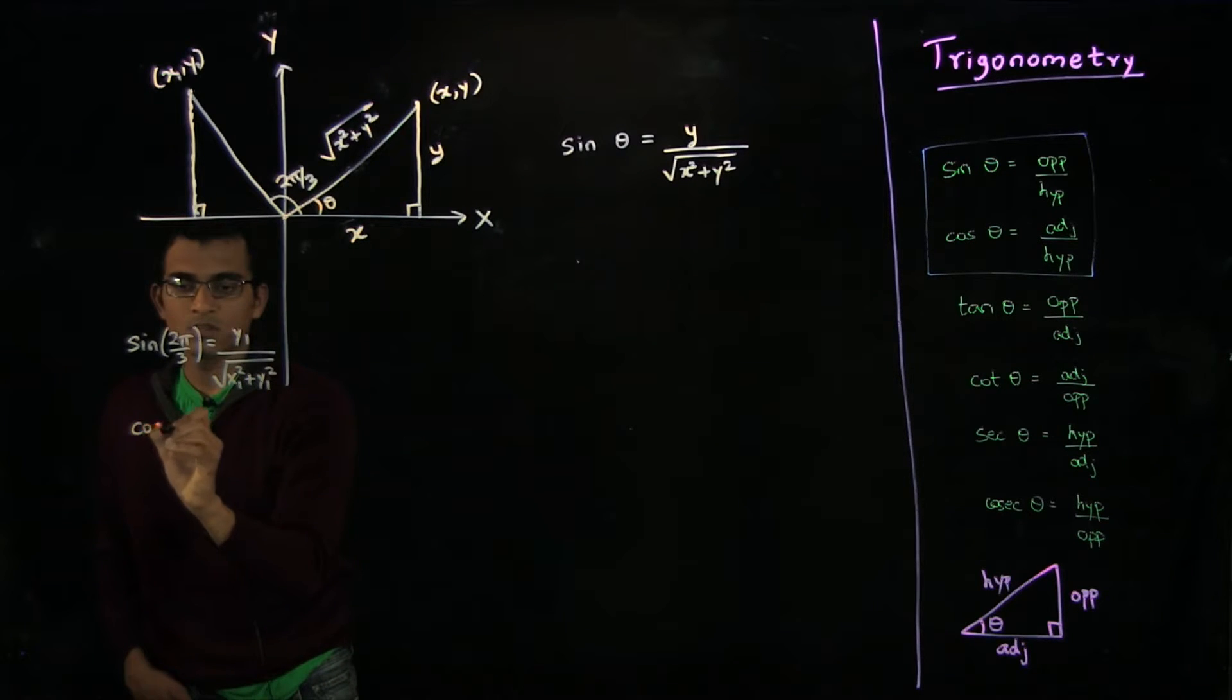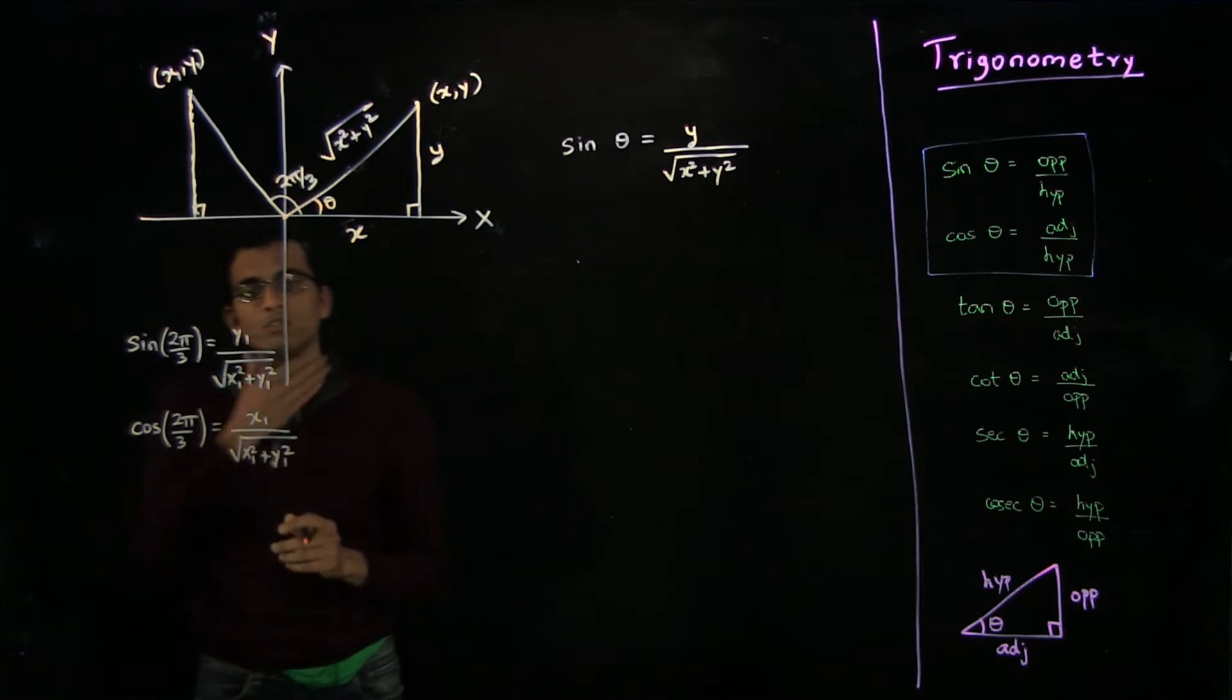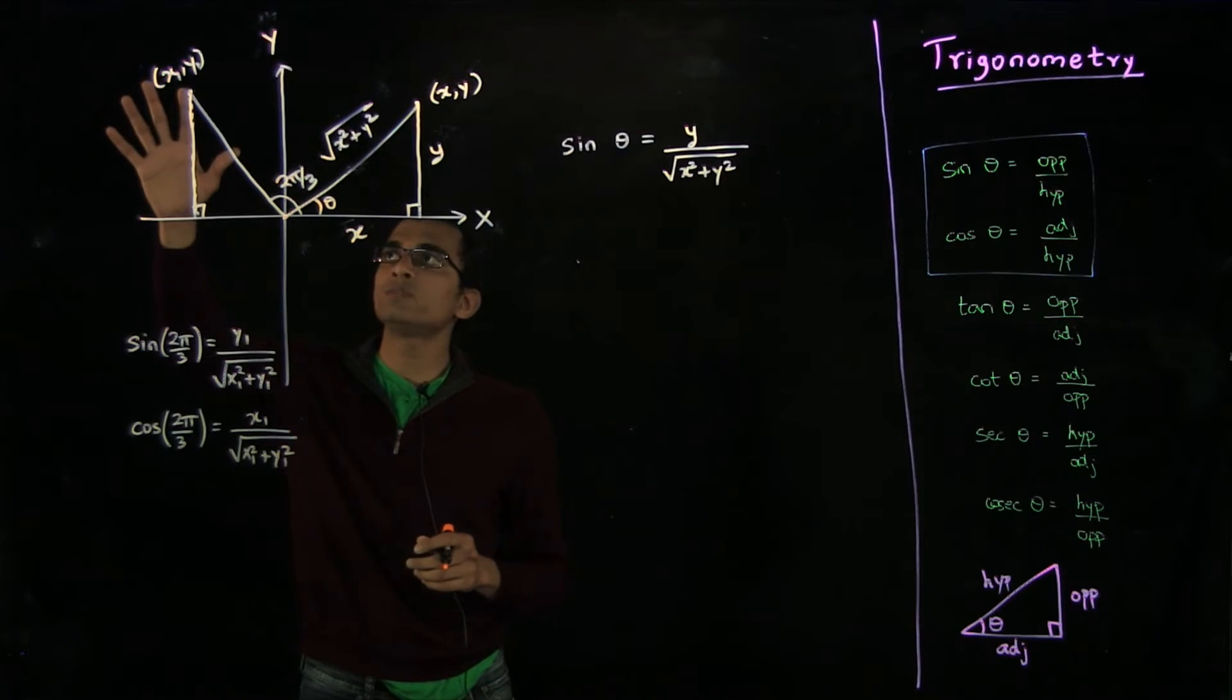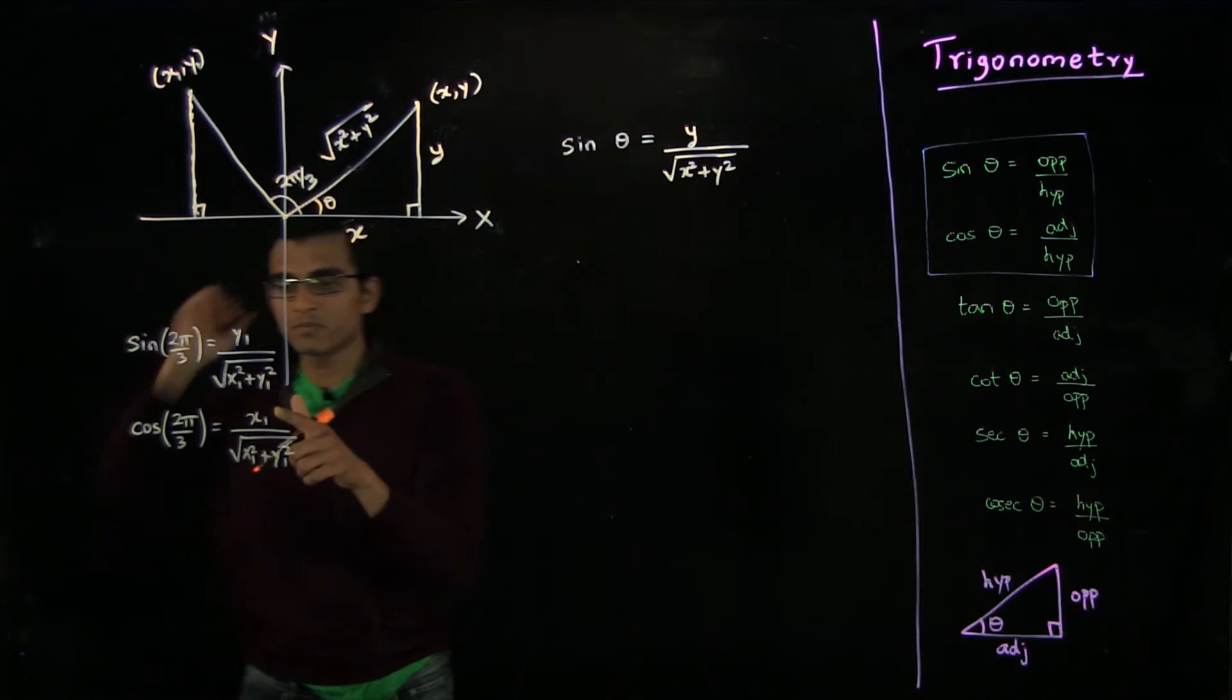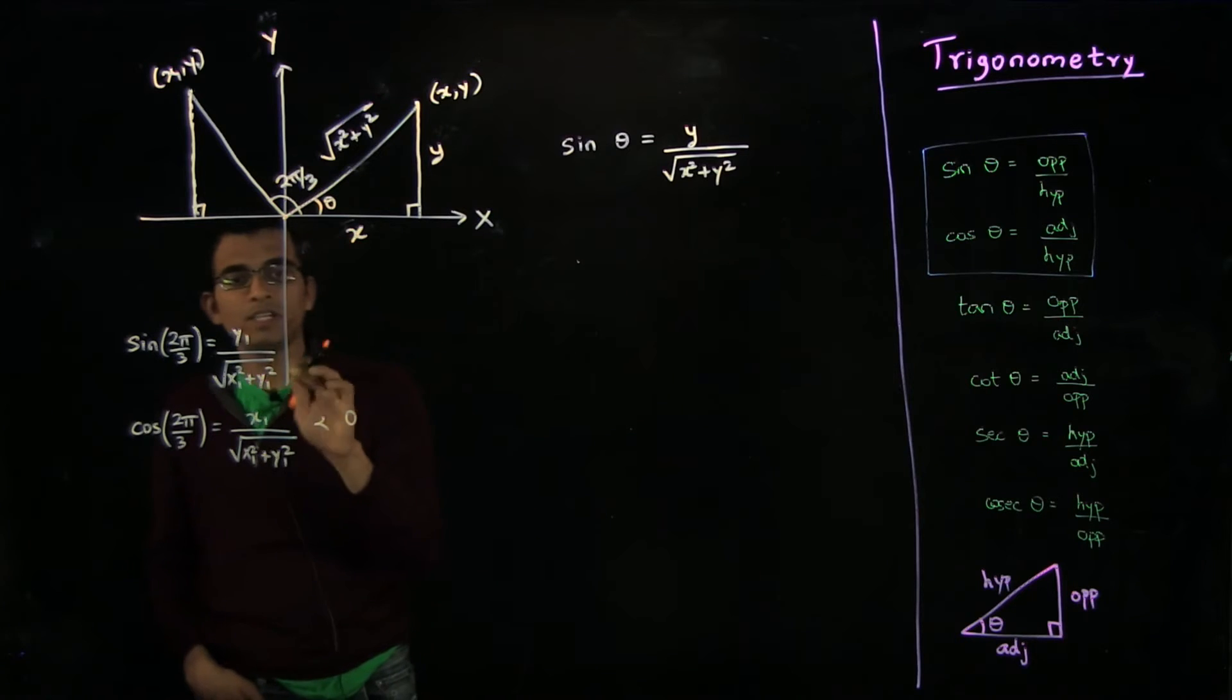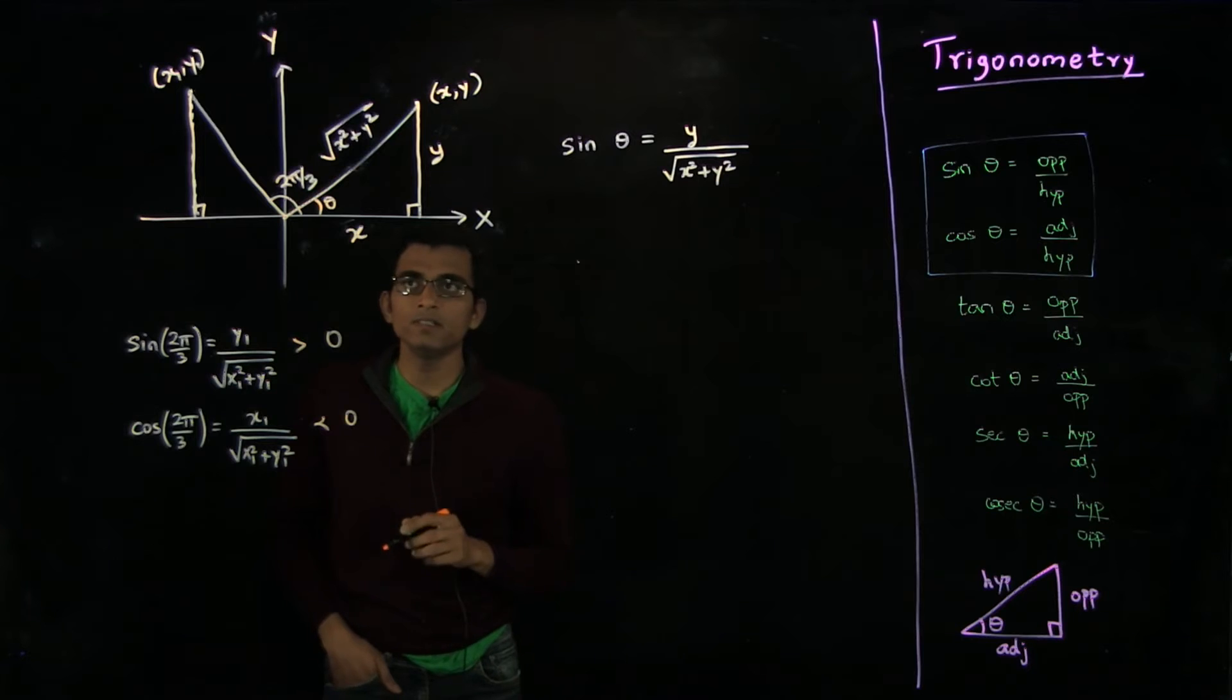And similarly, cosine of this angle will be given by x₁ divided by √(x₁² + y₁²). Now one thing to note here is that x₁ for this point is negative and y₁ is positive. So the cosine of this angle is less than 0, whereas the sine of this angle is greater than 0.